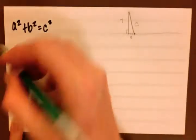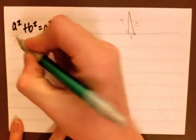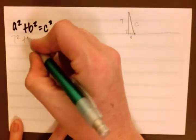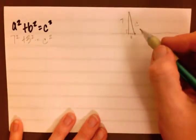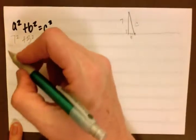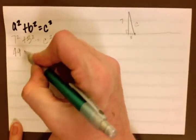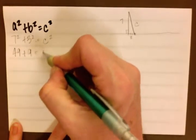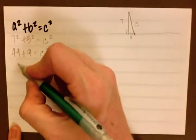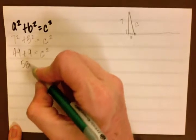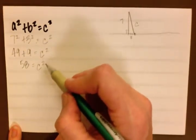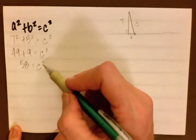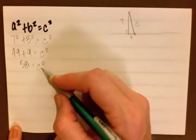So let's go ahead and plug 7 squared plus 3 squared equals c squared. We're solving for c, the length of the rope. So we have 49 plus 9 equals c squared. 49 plus 9 is 58 equals c squared.